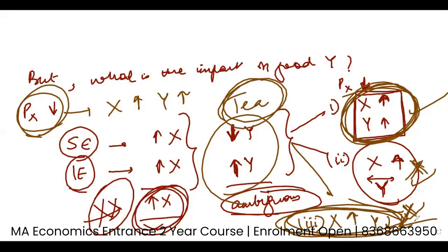The third situation is if Y is a neutral good. For example, if you were using one unit of toothpaste before, now also you will consume the same one unit of toothpaste. So different situations are possible depending on the type of good Y.